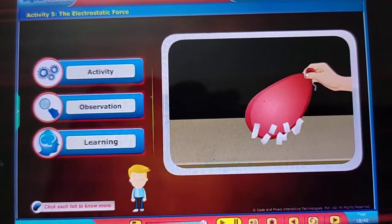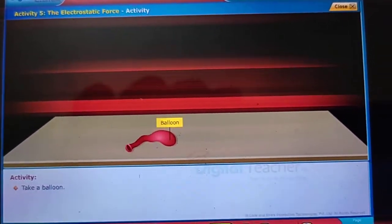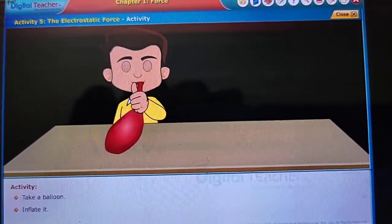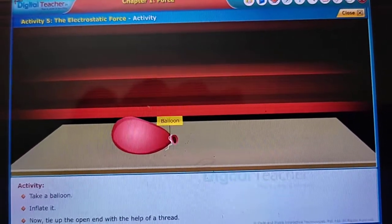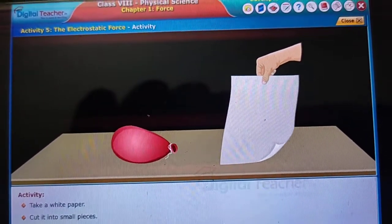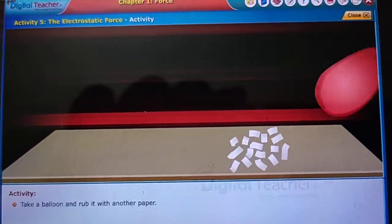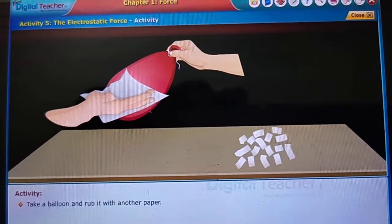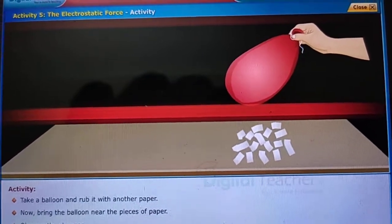Click each tab to know more. Take a balloon, inflate it, and tie up the open end with the help of a thread. Take white paper and cut it into small pieces. Place the small paper pieces on the table. Take the balloon and rub it with another paper, then bring the balloon near the pieces of paper and observe the changes.